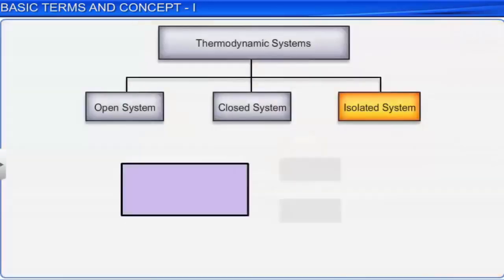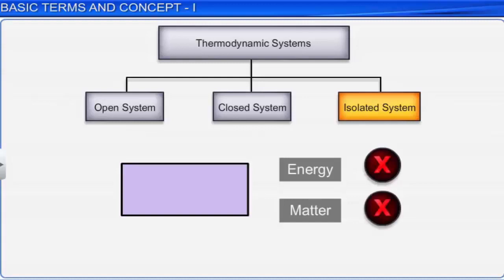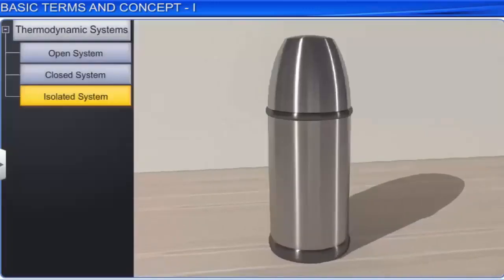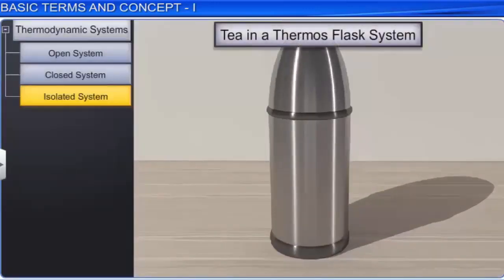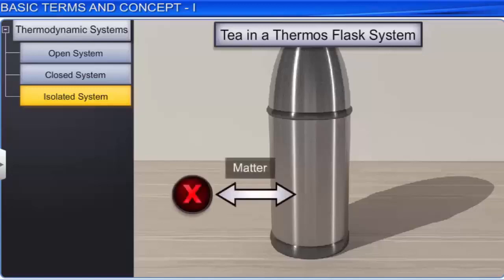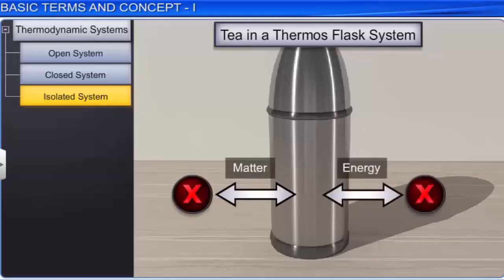A system that can exchange neither energy nor matter with its surroundings is called an isolated system. For example, tea kept in a thermos flask remains hot, and the vapor also doesn't escape out. This is because neither matter nor energy can be exchanged with the surroundings. Hence, this is an example of an isolated thermodynamic system.